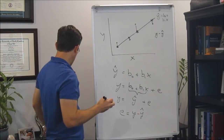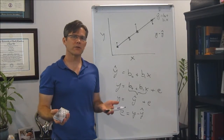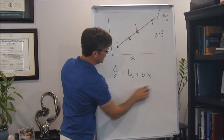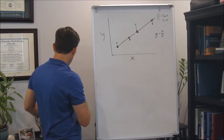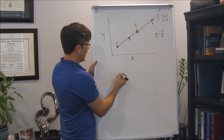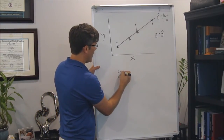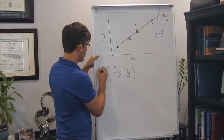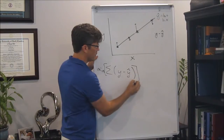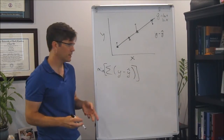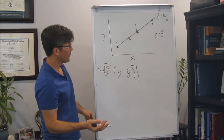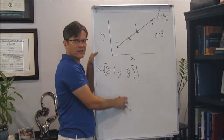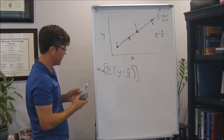We want to pick the line that maximizes correspondence between predicted and observed values. So how do we make this an objective criterion for choosing B0 and B1? One approach: take all Y minus y-hat values and add them up, trying to make that sum as small as possible — minimize the sum of residuals. But there's a problem: some residuals are positive, others are negative, and they tend to cancel each other out, leaving us with zero — which isn't useful.